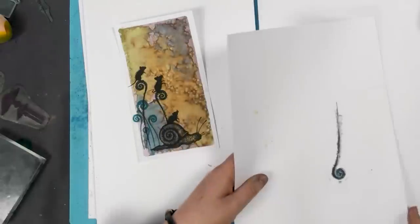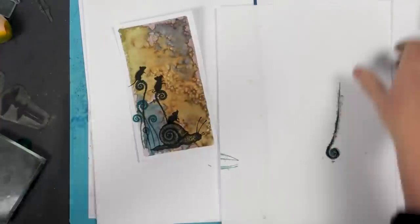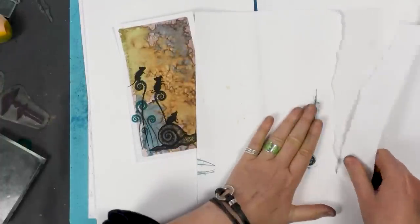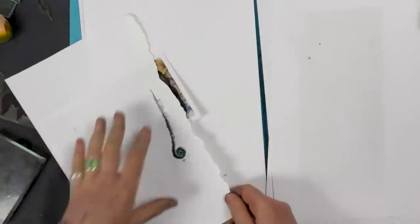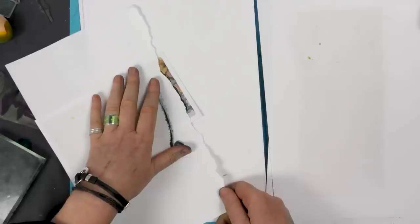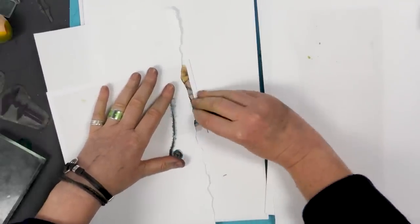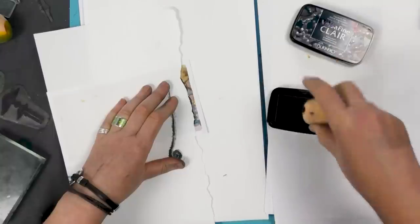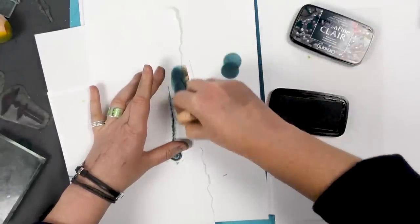So using some torn paper, I'm just going to ground the snail and just sit in that just on the edge of where the snail is. And I'm going to ink up in the twilight with my smoothie and just take that over the edge.